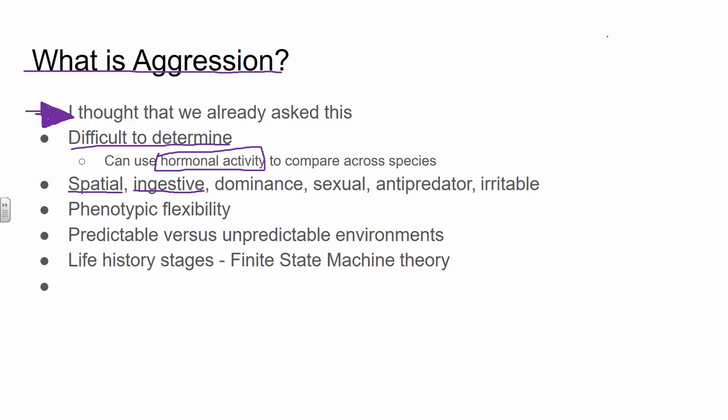Spatial aggression is related to territory — like occupying and maintaining the territory. So we have spatial, we have ingestive, and they also identify dominance. This is kind of in those social hierarchies — there's aggression related to being the top lobster, the top mouse. I'd like to make an old cartoon joke and say 'top cat.'